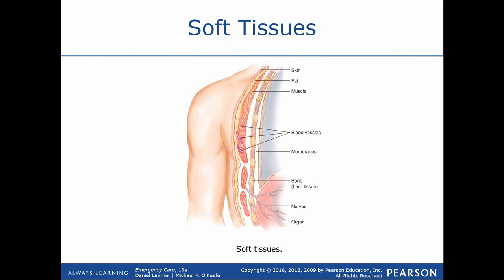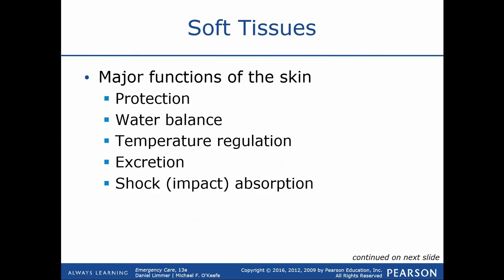We'll start with a brief review of anatomy of different soft tissues and then get into the injuries specifically. There are several layers surrounding the outside of our body. Our skin is the most prominent on the outside; beneath that we have fatty tissues, muscle, and blood vessels; and beneath all of that we have connective tissue such as tendons and ligaments.